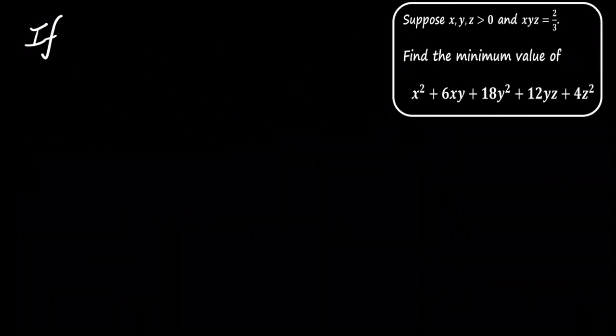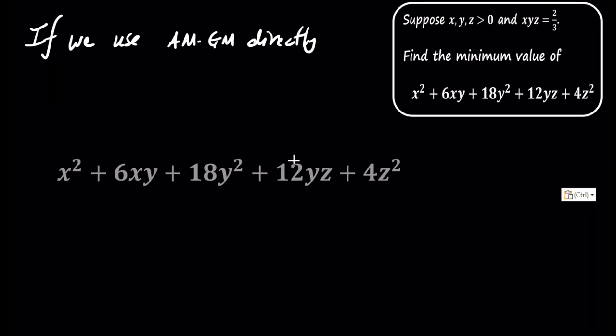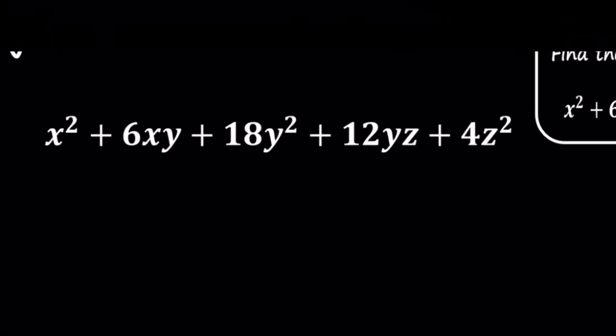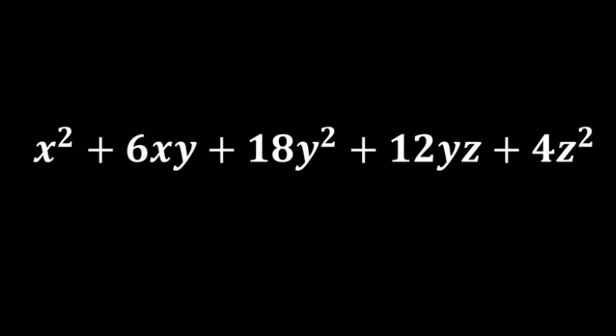To begin, let's consider using the Arithmetic Mean Geometric Mean Inequality, or AM-GM, on the terms in our expression, which is x² + 6xy + 18y² + 12yz + 4z². By applying AM-GM directly, we get the following.